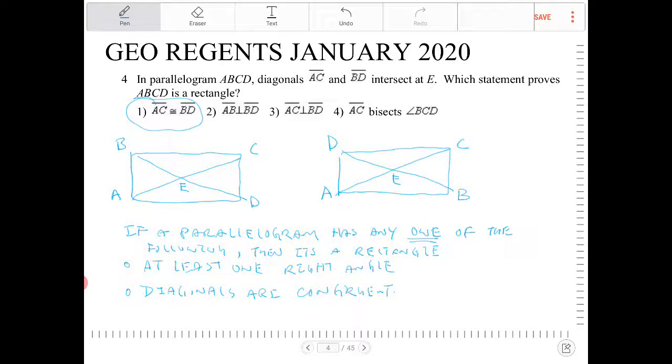AB perpendicular to BD? Nope. AB is a side, BD is a diagonal. They can't be perpendicular.